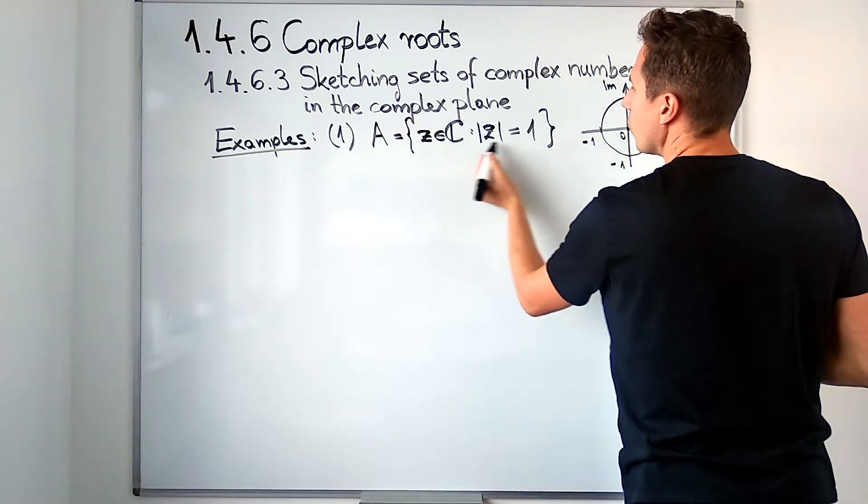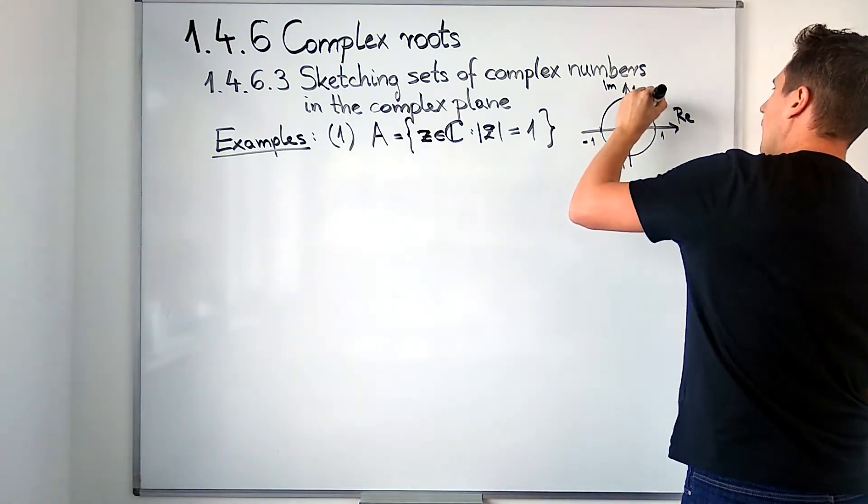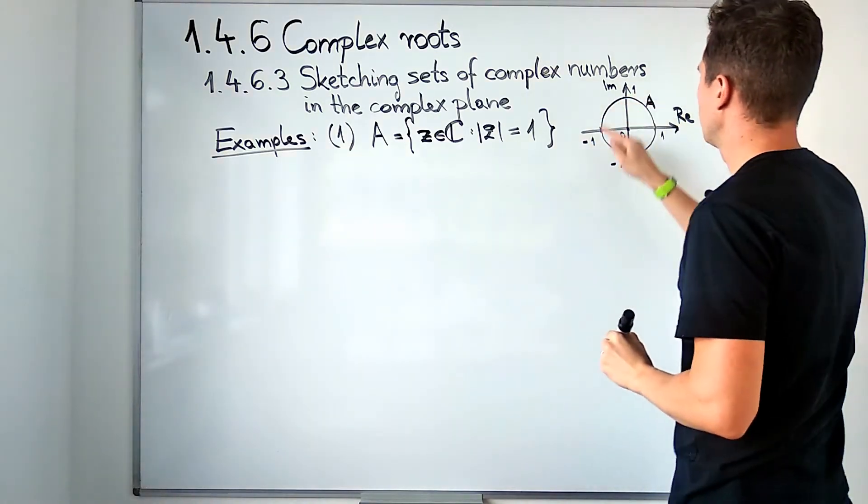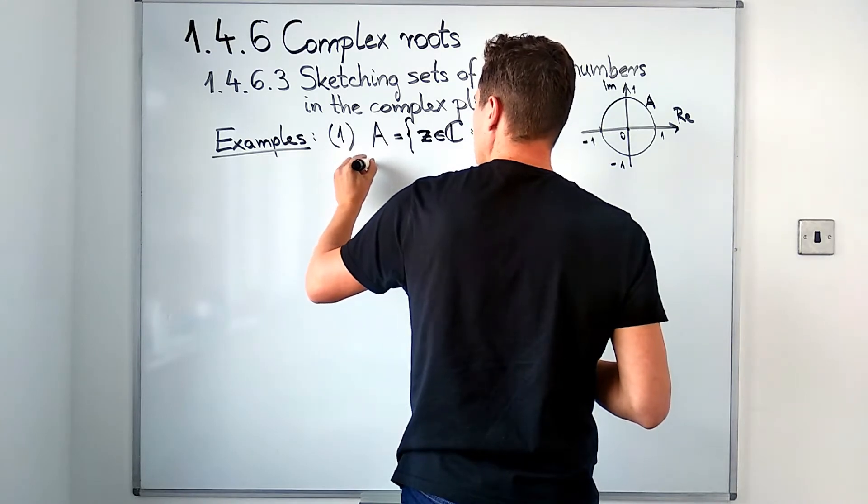If zero is in the origin and this is one unit of distance away from it, what we have to look at is basically the circle that is centered at the origin and has radius one. So this circle, all points on this circle, represent complex numbers which satisfy this relation. This is called the unit circle.